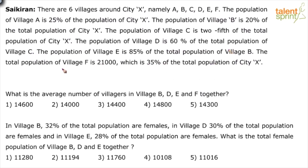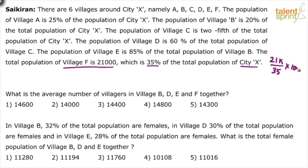Only one value has been given — the population of village F. Based on this we'll have to arrive at all the other values. The population of F is 21,000, which is 35 percent of X. So 35 percent of X is 21,000, which means 10 percent is 6,000, so X is 60,000. That is, 21,000 divided by 35 into 100 gives us 60,000. So X equals 60k.